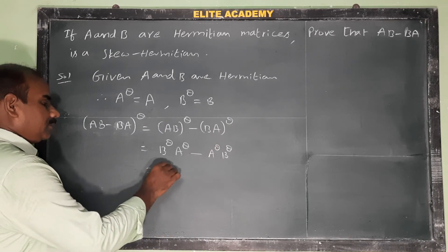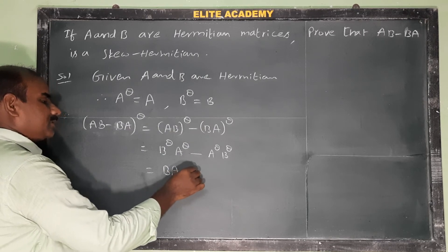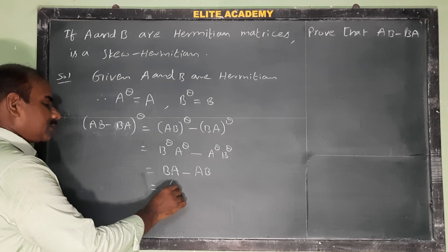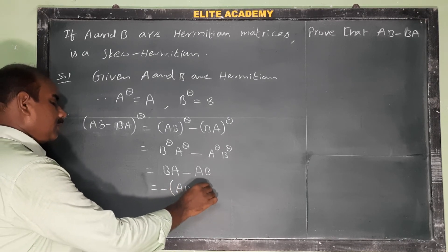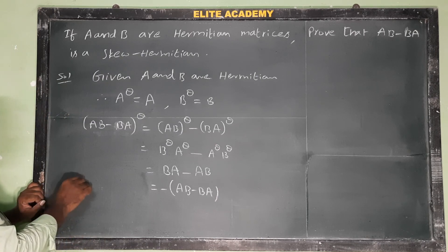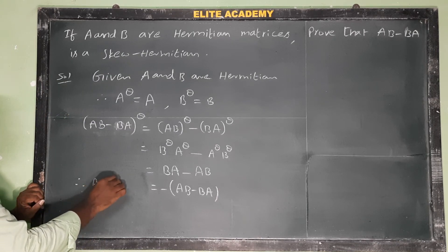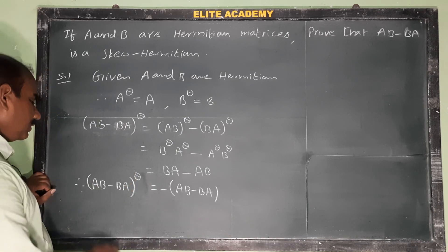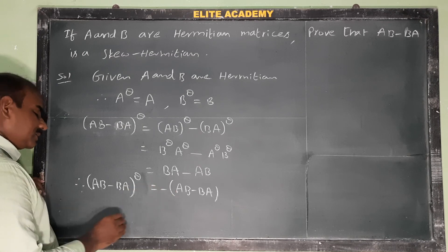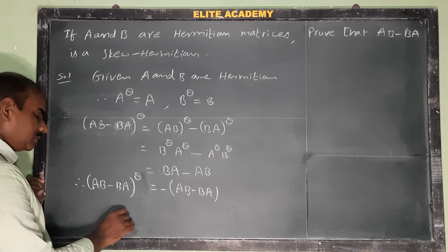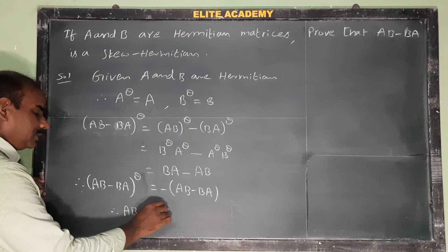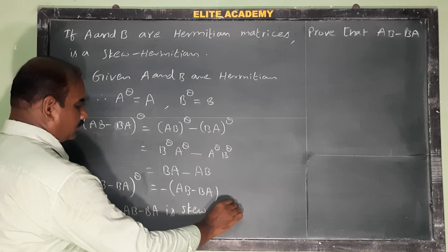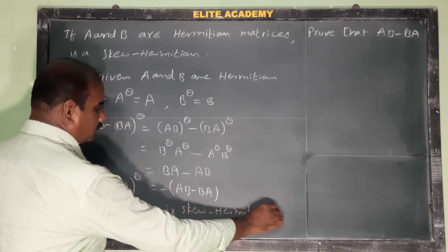So B† means B and A† means A. Substituting: (AB)† = BA and (BA)† = AB. Taking minus as common, we get AB minus BA. Therefore (AB - BA)† = minus(AB - BA), which means AB minus BA is a skew-Hermitian matrix.